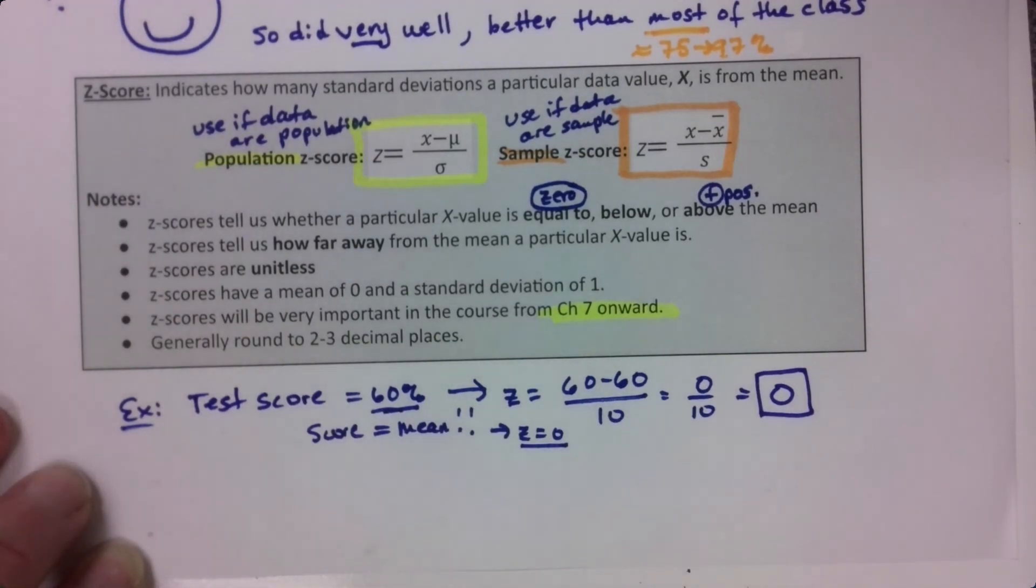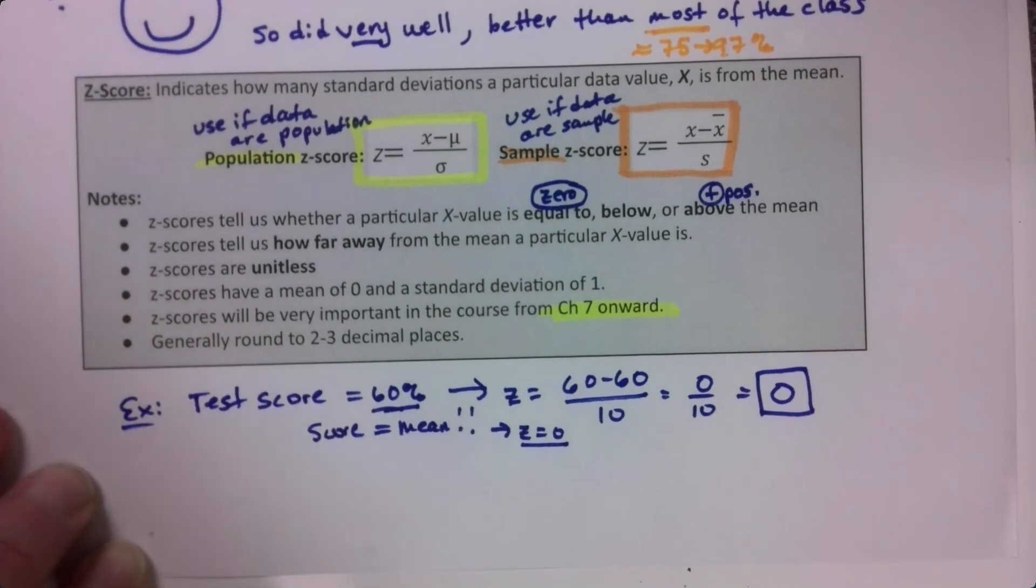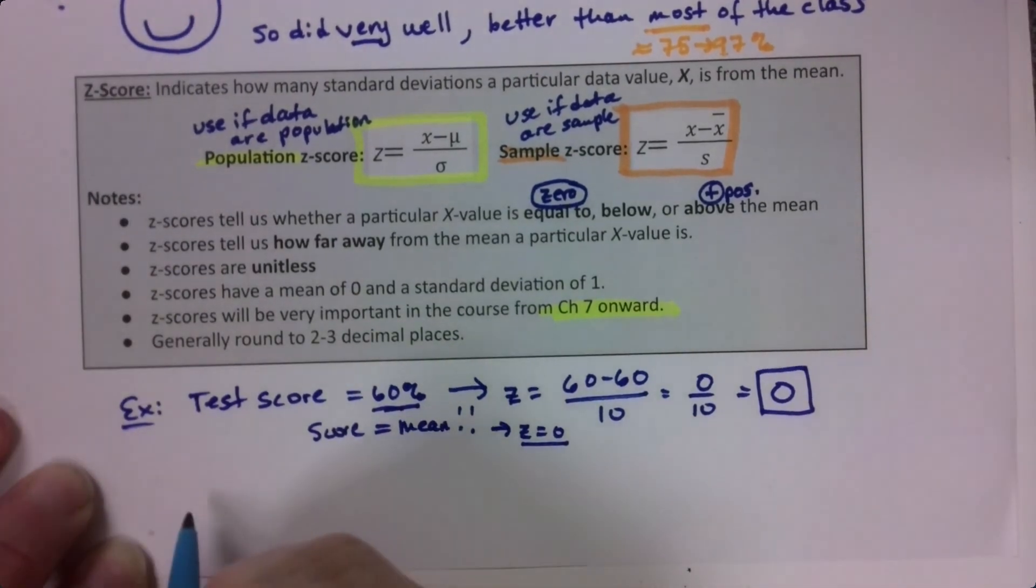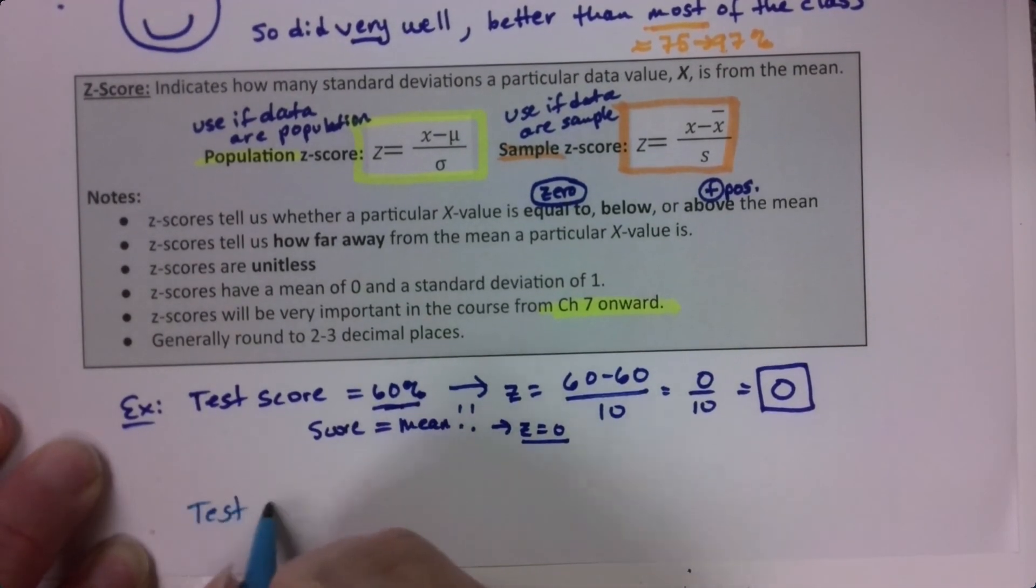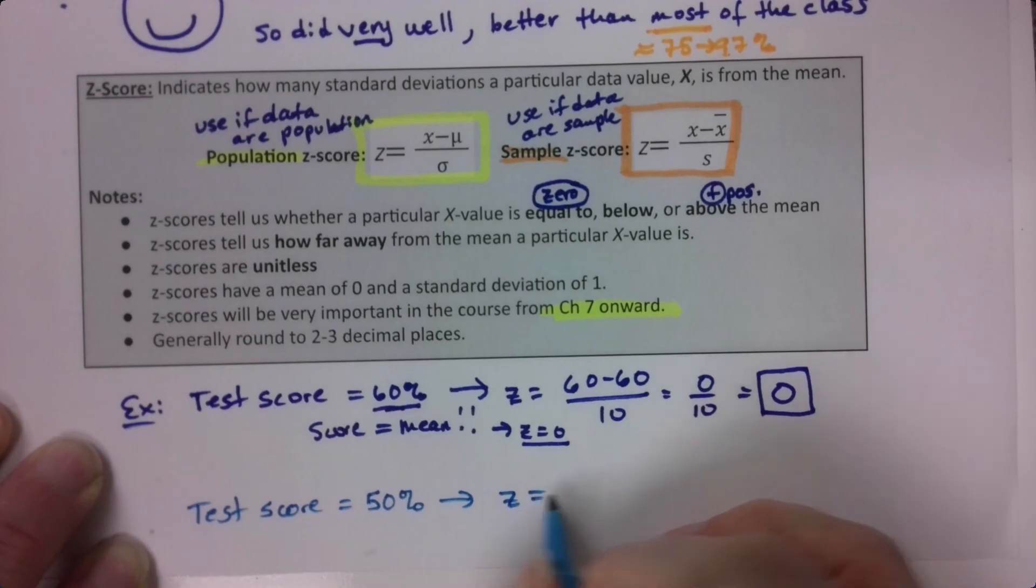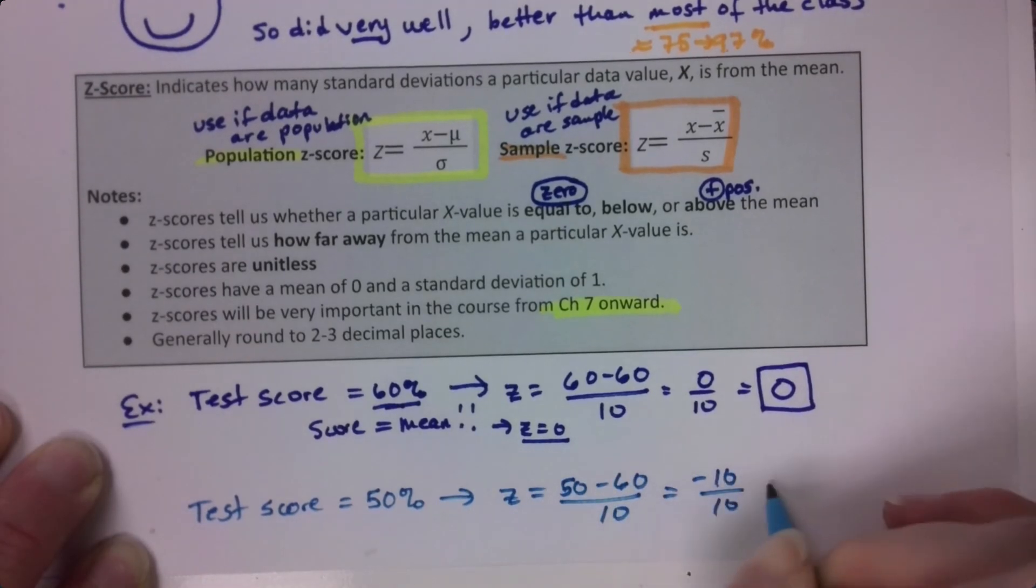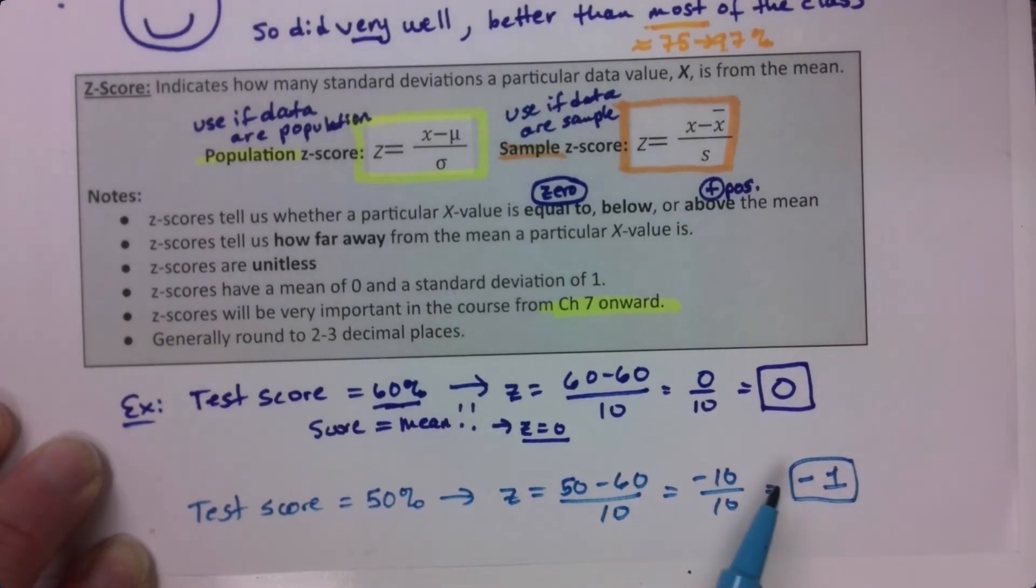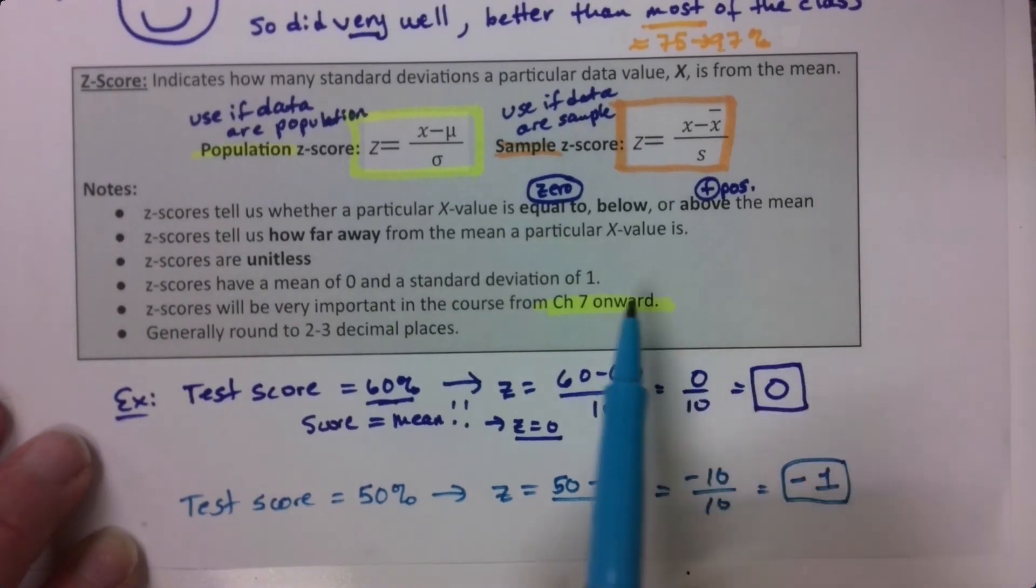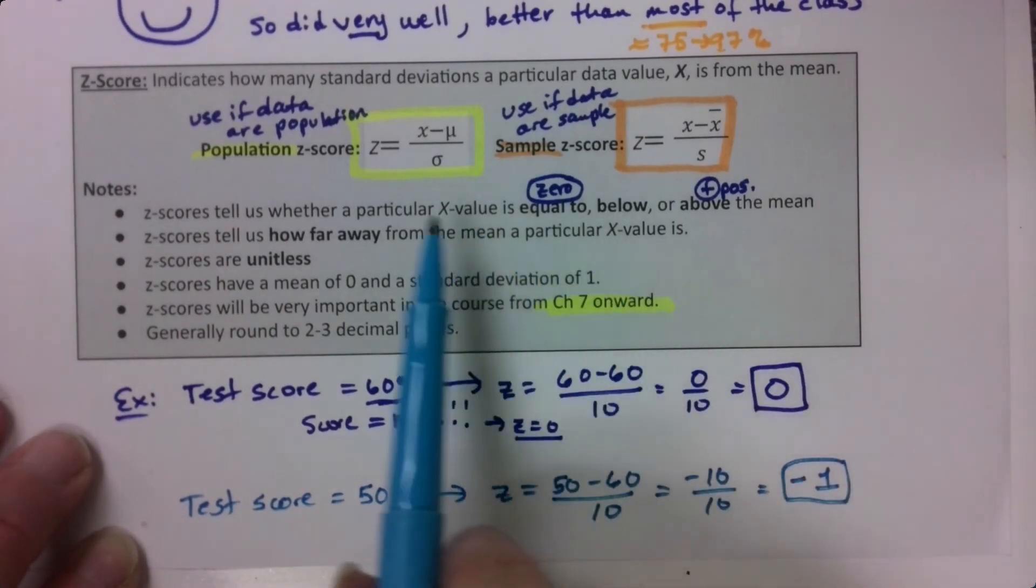Now, what if you scored below the mean? Let me change to a different color real quick, just to give you an example. So if your test score was 50%, then your z-score would be 50 take away 60 divided by 10, which is negative 10 over 10, which is negative 1. So you can have negative z-scores if you're below, which is what this is getting at.